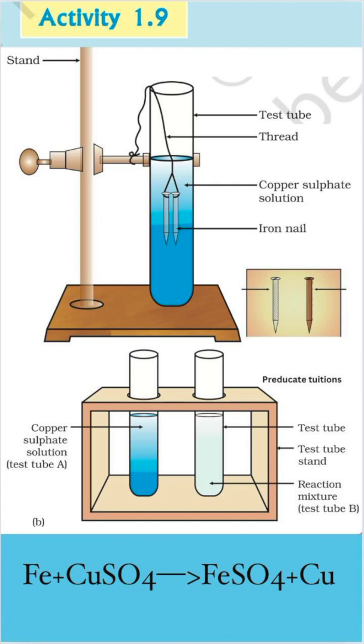You will observe that the blue color of copper sulfate solution fades and it changes into green color. The iron nail that remained suspended has a brownish coating on its surface.